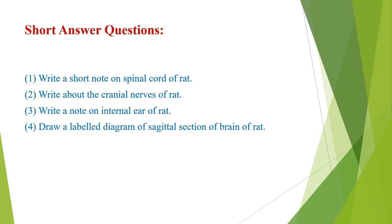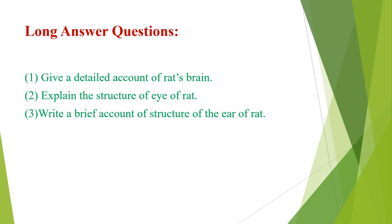Short answer questions: Question 1 — write a short note on the spinal cord of rat. Question 2 — write about the cranial nerves of rat. Question 3 — write a note on the internal ear of rat. Question 4 — draw a labeled diagram of a sagittal section of the brain of rat. Long answer questions: Question 1 — give a detailed account of the rat's brain. Question 2 — explain the structure of the eye of rat. Question 3 — write a brief account of the structure of the ear of rat. Thank you.